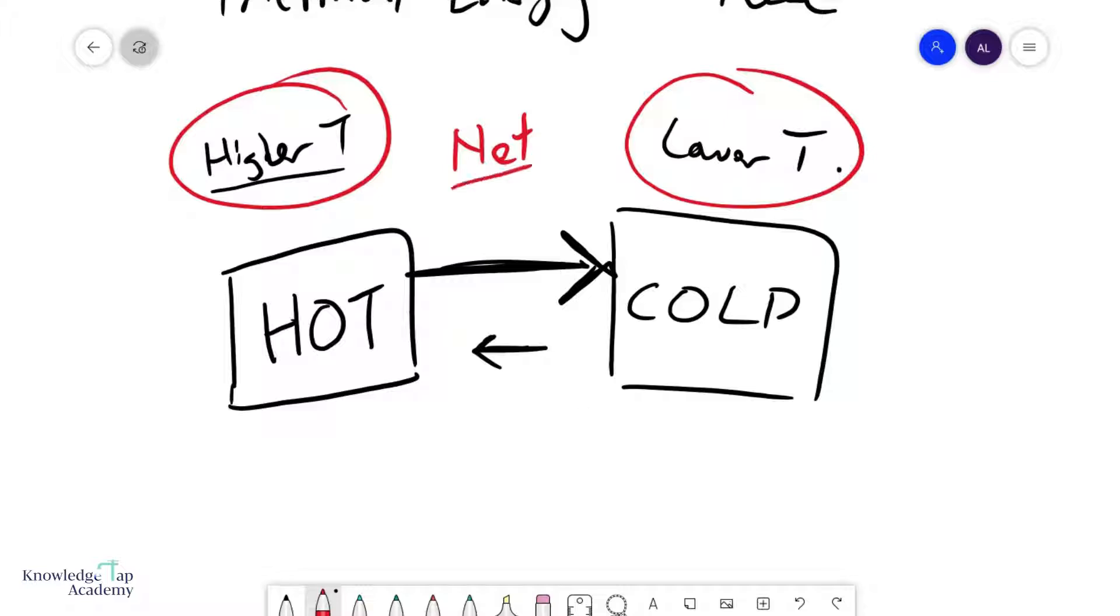And I want to emphasize on the word net. Which means that heat still essentially flows in both ways, but just that a larger amount of heat on average goes from the hot to the cold, and a smaller amount goes from the cold to the hot. There is still a transfer both ways, but overall, the transfer is from the hot to the cold.